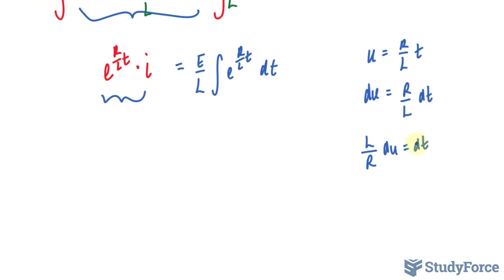I'll substitute this dt with this expression, and that gives me the integral of e to the power of U, L over R dU. This L and this L will cancel out, leaving me with E over R, pulling out that R, times the integral of e to the power of U dU. The integral of e to the power of U is simply e to the power of U. So we have E over R, e to the power of U, which we know is R over L times T, plus C, and the left side stayed the way it is.